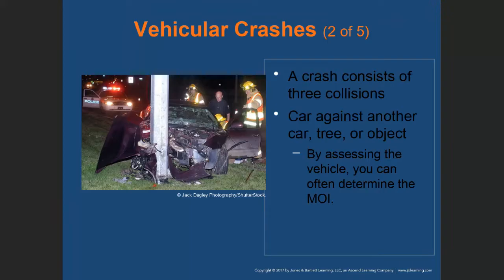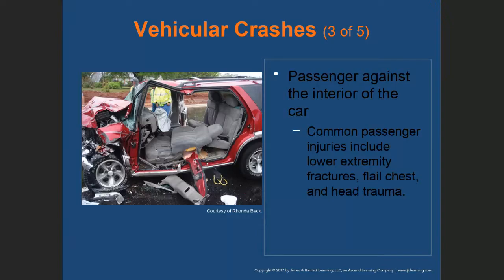A crash consists of three collisions: the car against another car or object, the passenger against the interior of the car, and the organs against the interior of the body. By assessing the vehicle, you can often determine the mechanism of injury. When examining the interior, look at the dashboard and steering wheel — if the upper portion of the steering is deformed, it's usually the chest; spider-webbing in the windshield was caused by the head. Common passenger injuries include lower extremity fractures, flail chest, and head trauma.